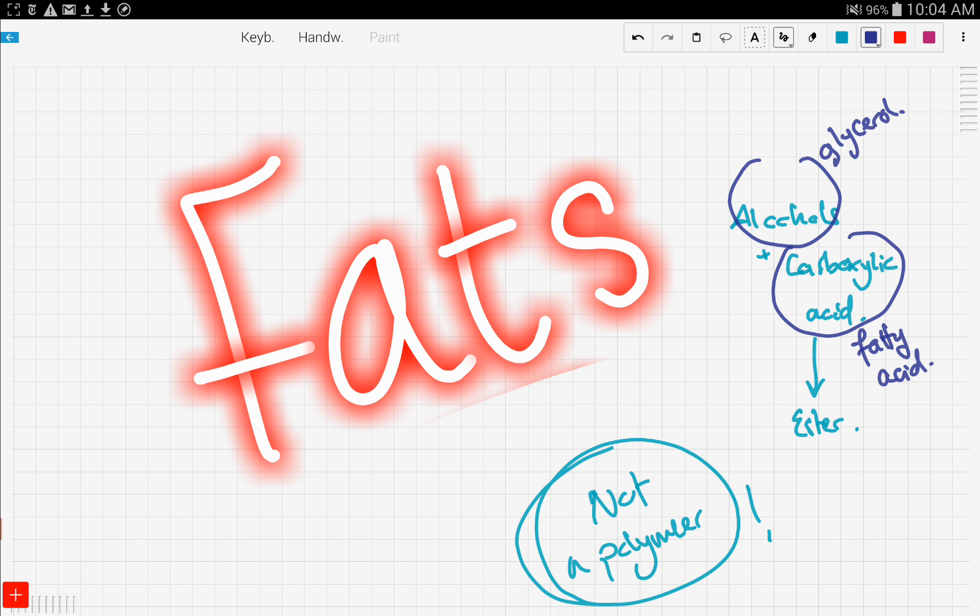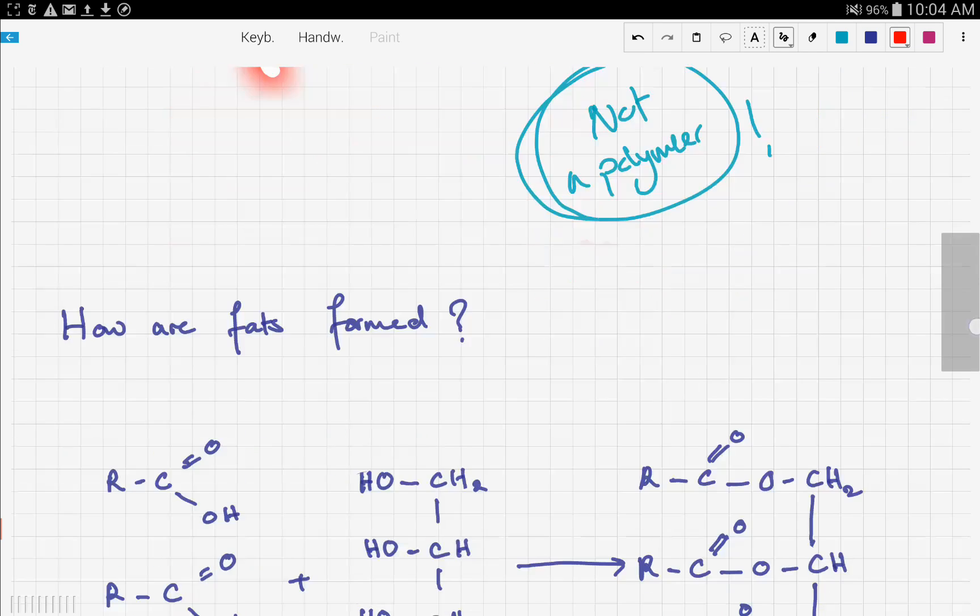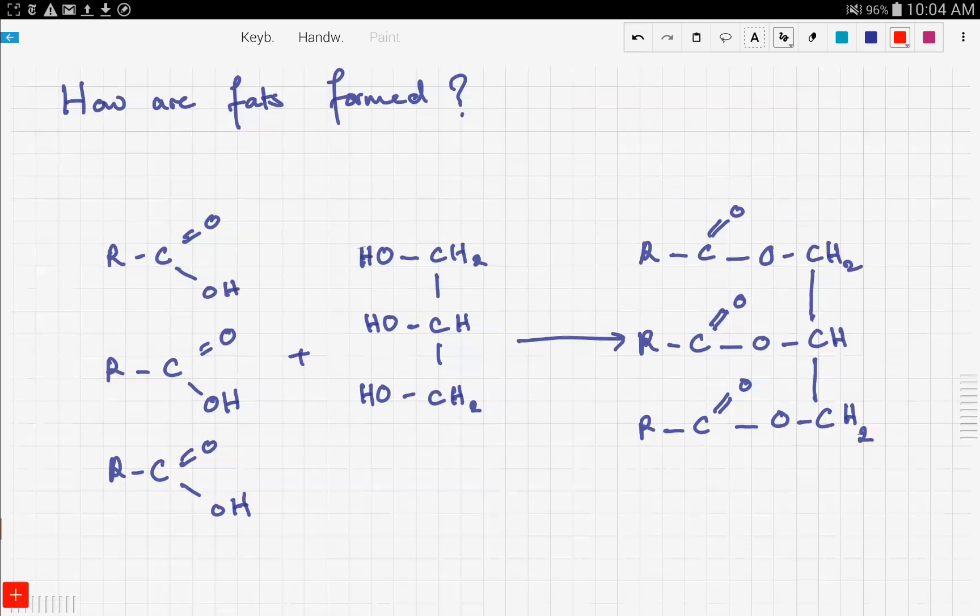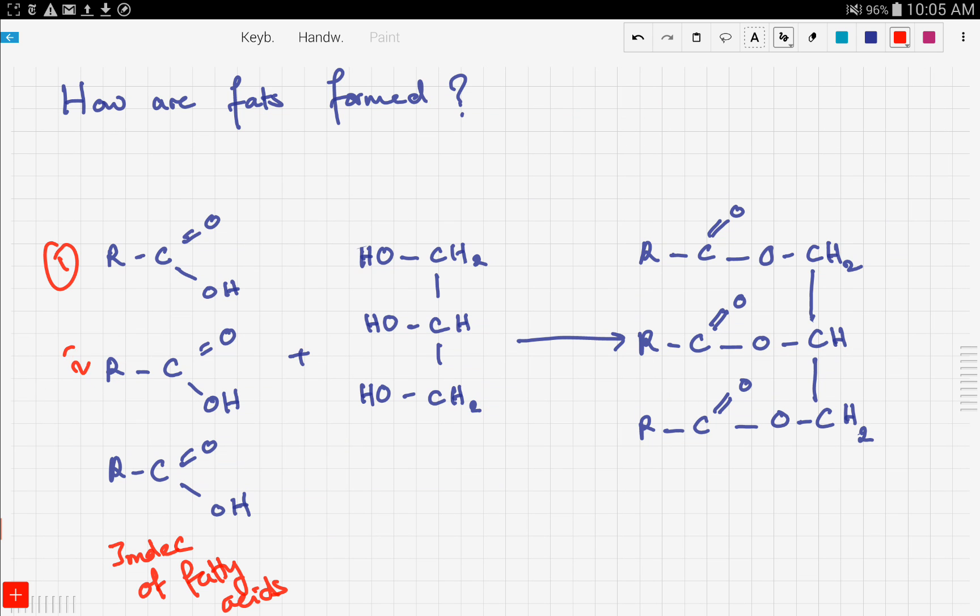Let's see how this is done and how we form fats. Here we have three molecules of fatty acids - number one, number two, number three - and the radicals here are different. So we have three different molecules of fatty acids, and here we have one molecule of glycerol.